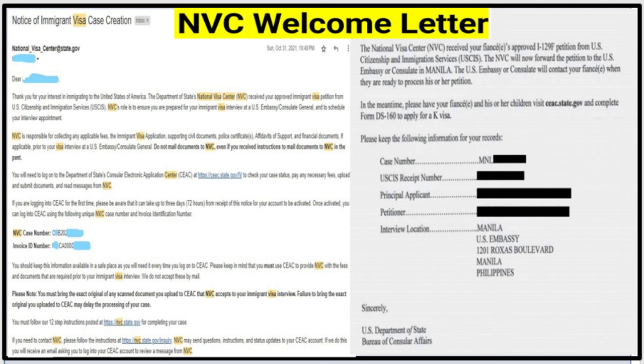There are two welcome letters. The left-hand side one is for immigrant visa, also called notice of immigrant visa case creation. It has an NVC case number and invoice ID number — that's what you need to complete your immigration journey at NVC. The right-hand side is for K-Visa. This welcome letter has only a case number, which you need to complete your immigration journey at USTravelDocs.com. So at this point, these two visas take a different path: immigrant visa goes through NVC, and K-Visa goes through USTravelDocs.